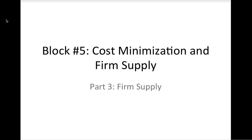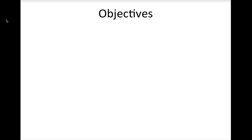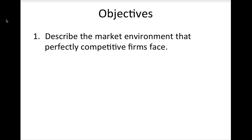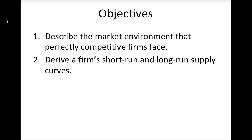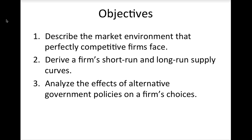In this lesson we will complete our study of firm behavior by deriving the firm's short-run and long-run supply curves. By the end of this lesson you should be able to describe the market environment that perfectly competitive firms face, derive a firm's short-run and long-run supply curves, and analyze the effects of alternative government policies on a firm's choices.